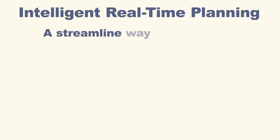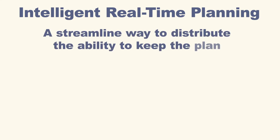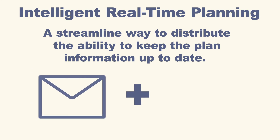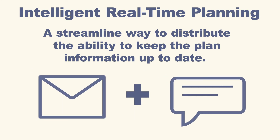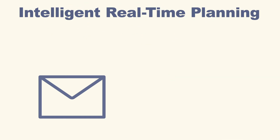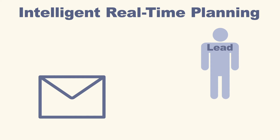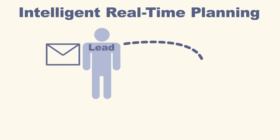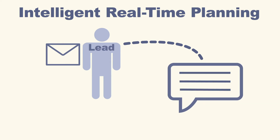Intelligent, real-time planning is a streamlined way to distribute the ability to keep the plan information up to date. It's a combination of an automated email notification system and quick update tools. On a regular basis of your choosing, the email notifications go out to the folks assigned as leads for opportunities and activities, linking them back to the quick update system — a very simple, efficient way to collect information and keep the plans up to date.